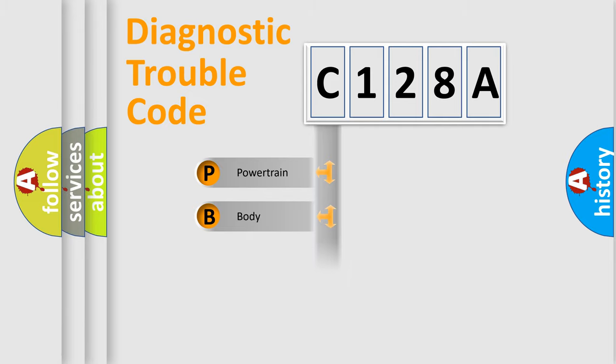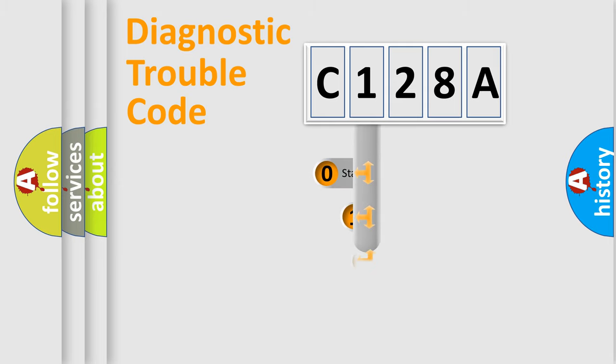Powertrain, body, chassis, network. This distribution is defined in the first character code.